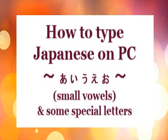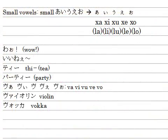みなさん こんにちは。Kazueです。How to type Japanese on the PC? Today's lesson is the last lesson of this series, and it's about small vowels — a small version of A-I-U-E-O — and also some special letters in Japanese.